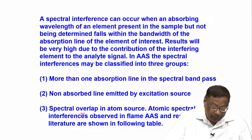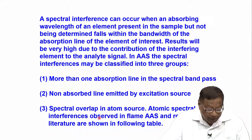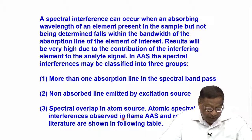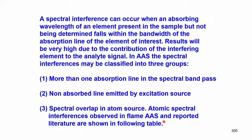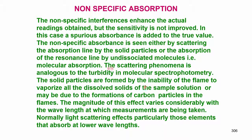The third type is spectral overlap in the atom source — in the flame. Atomic spectral interferences observed in the flame areas are reported in the literature and shown in a table. Now we will discuss non-specific absorption.